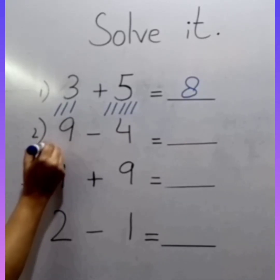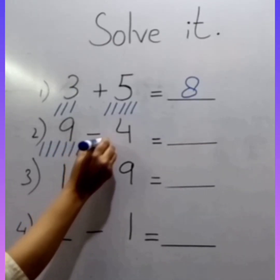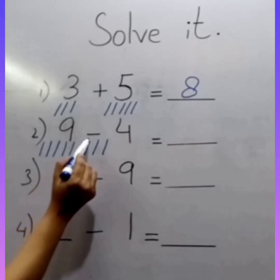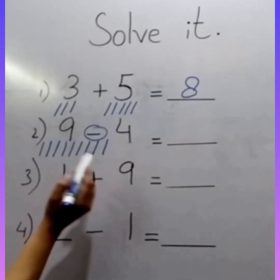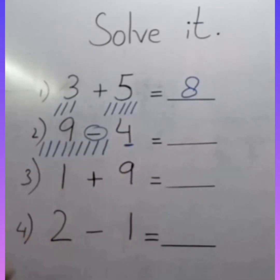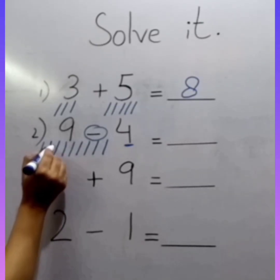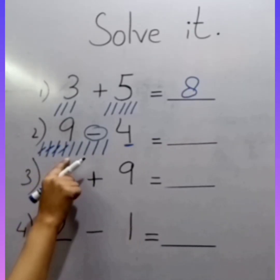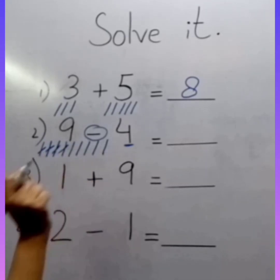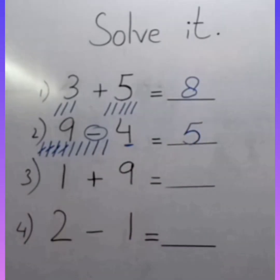Draw 9 lines: 1, 2, 3, 4, 5, 6, 7, 8, 9. Here is the sign of subtraction. Subtraction means remove the quantity. This is number 4, so I will cut 4 lines: 1, 2, 3, 4. How many remaining? 1, 2, 3, 4, 5. Yes — 9 minus 4 equals 5.